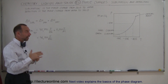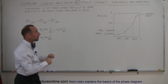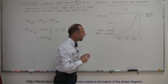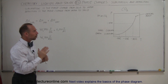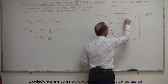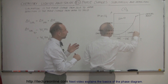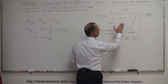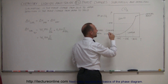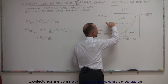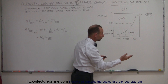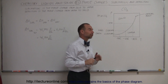One of the champions at going from solid to vapor is carbon dioxide. Here I have a partial phase diagram for carbon dioxide, which shows the relationship between solid carbon dioxide and vapor carbon dioxide. Notice that the pressure at which this happens depends upon the temperature, or vice versa — the temperature depends upon the pressure.